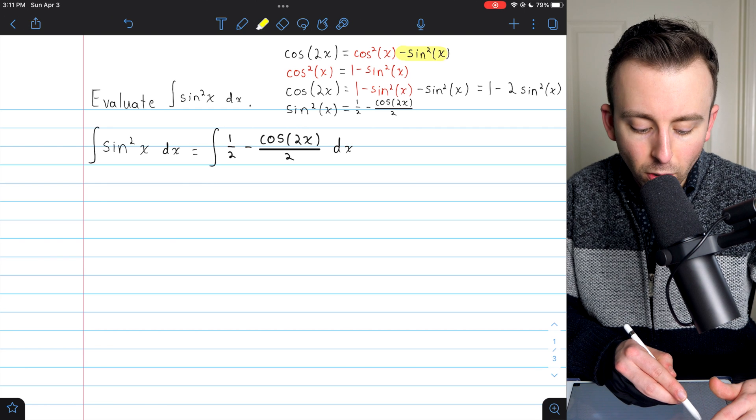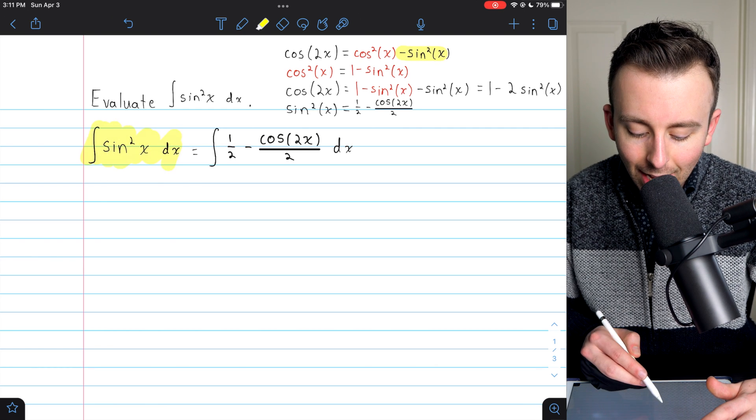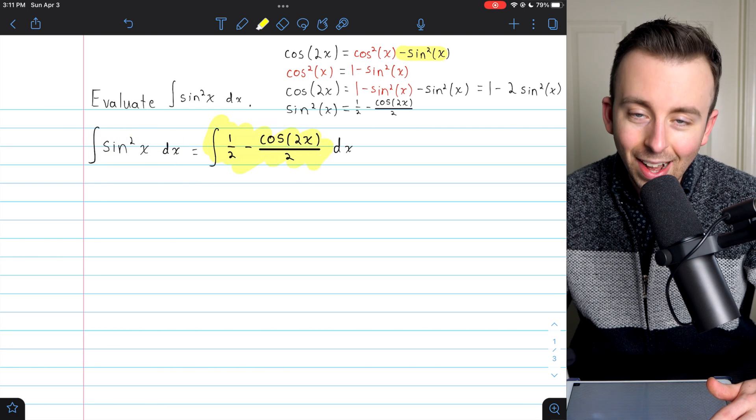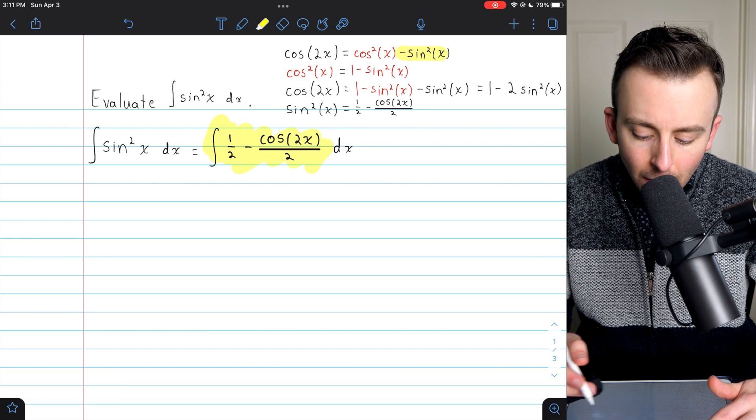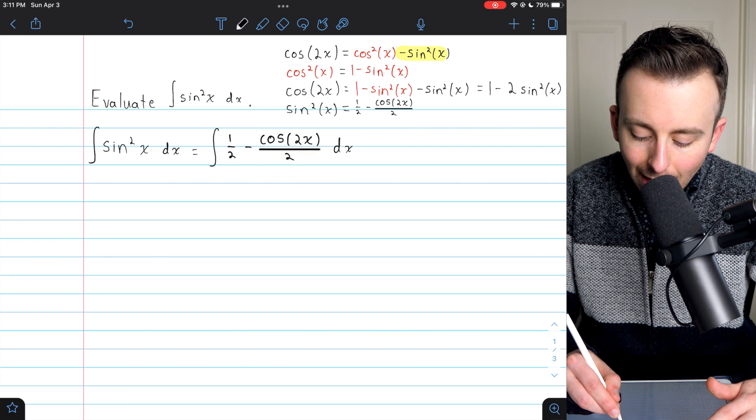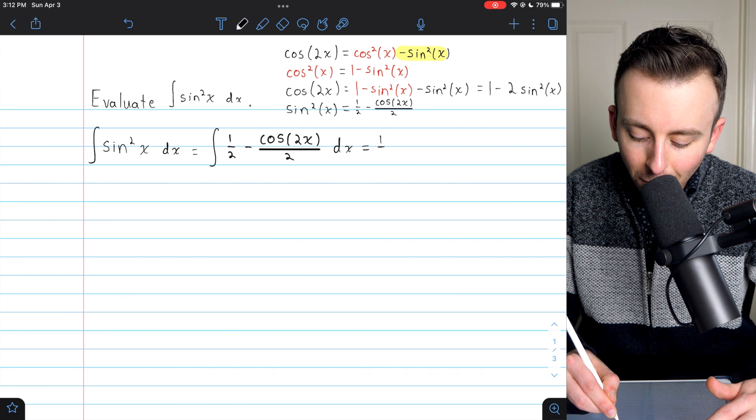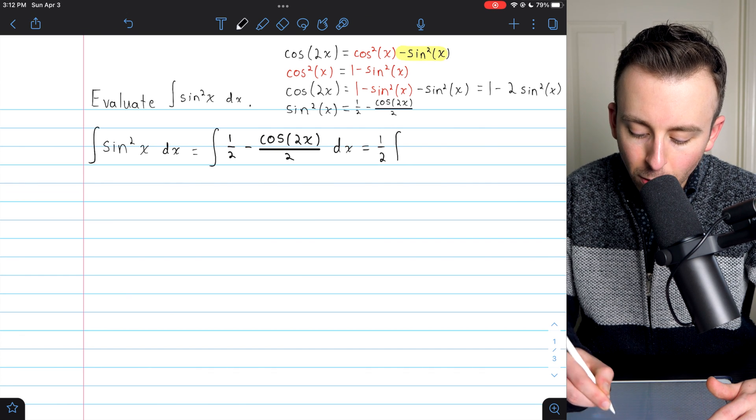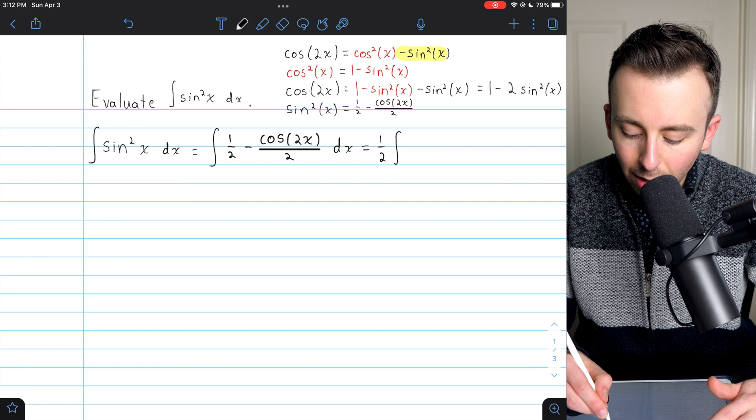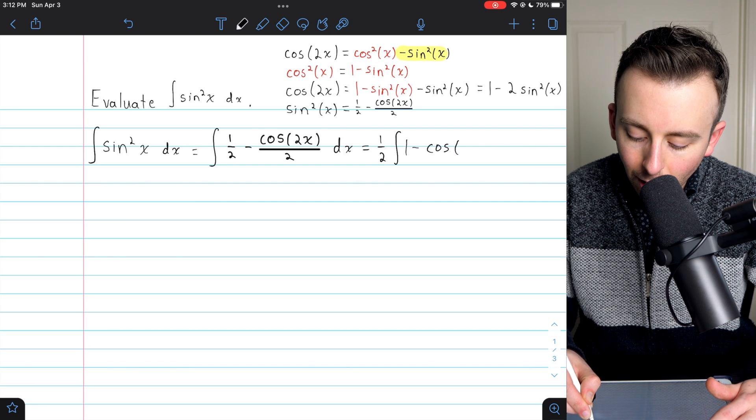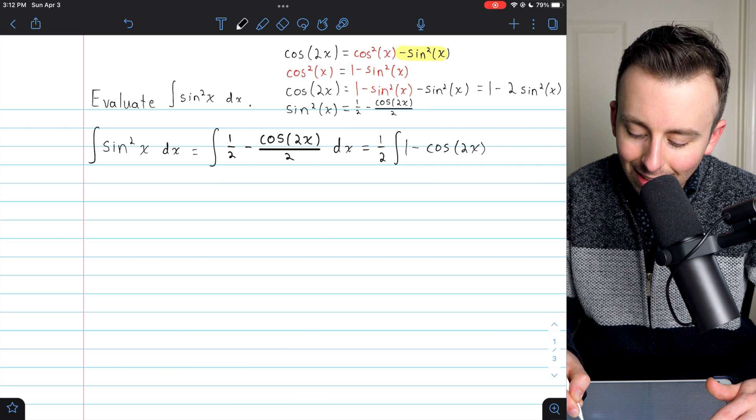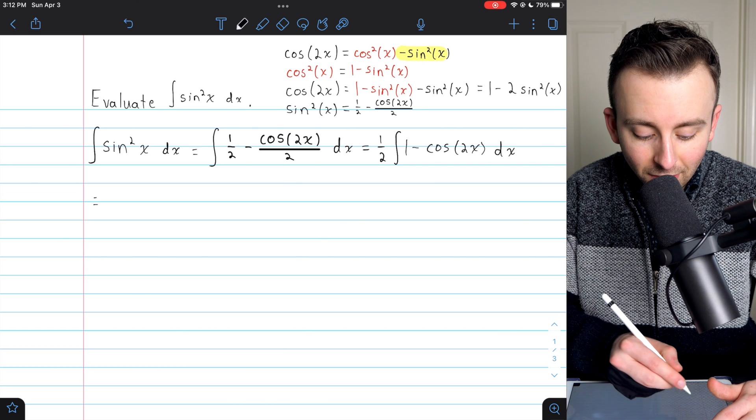Then we make the substitution. Integral of sine squared x is the integral of one half minus cosine of 2x over 2. Might as well take out a factor of one half just so things look a little cleaner inside the integral. So this is one half the integral of one minus cosine of 2x dx. And it's smooth sailing from here.